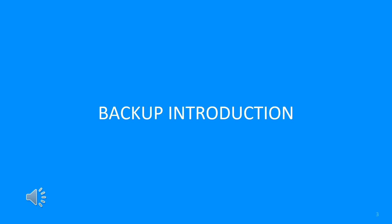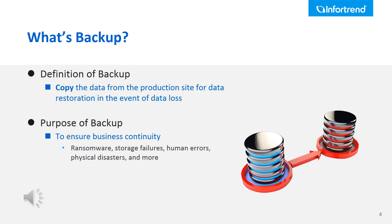In this chapter, we'll discuss the definition of backup and how an administrator can evaluate using indicators to create a suitable backup plan for their IT environment. The definition of backup is copying data from the production site so that the data can be restored in the event of data loss.